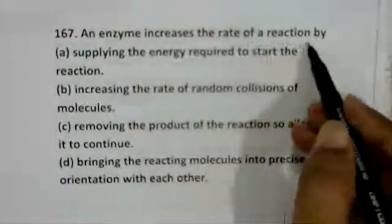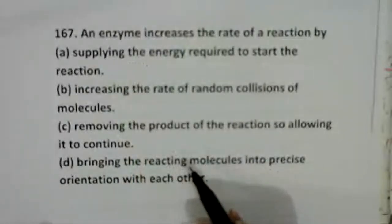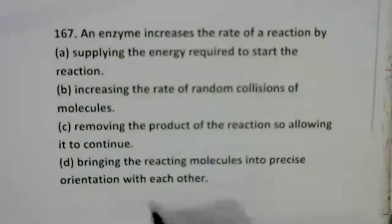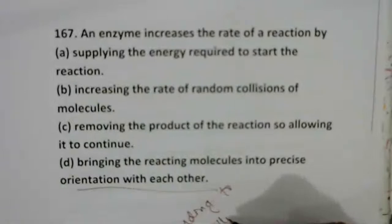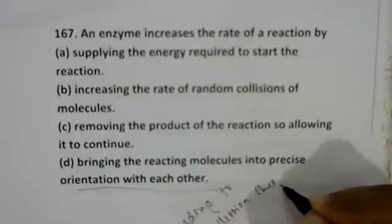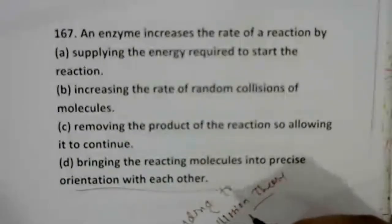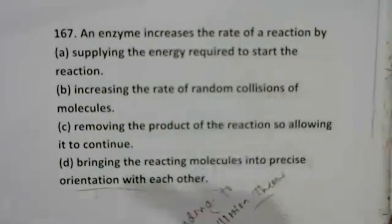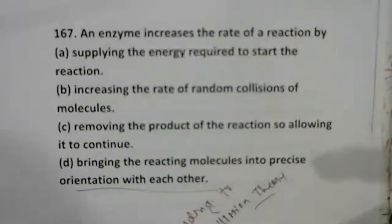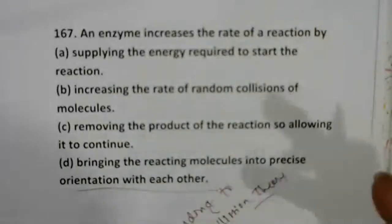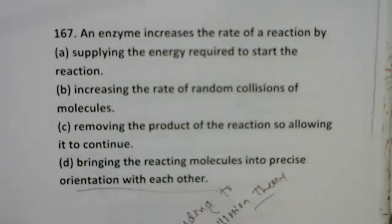The enzyme increases the rate of a reaction by bringing the reacting molecules into a precise orientation with each other. This is according to collision theory, where due to the collision of enzyme and substrate molecules at a particular orientation, they are converted into end products. The substrate molecule attaches to the precise active site on the enzyme molecule. Option D.